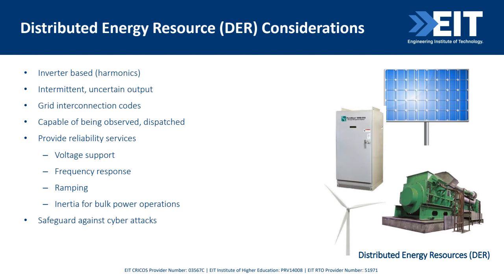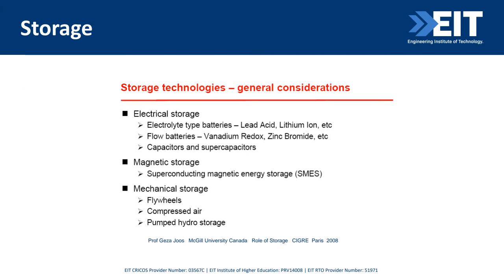Now, on storage — there are three types: the electrical ones, the magnetic ones, and the mechanical ones. The electrical types are electrolyte batteries such as lead-acid, lithium-ion, flow batteries including vanadium redox and zinc-bromide, and capacitors and supercapacitors. Magnetic storage is the SMES type of system. Mechanical includes flywheels, compressed air, and pumped hydro storage.